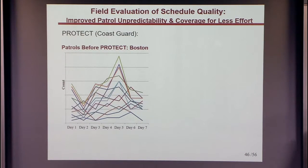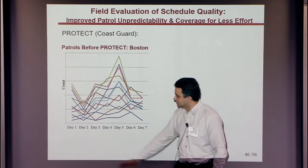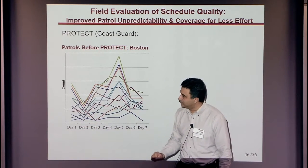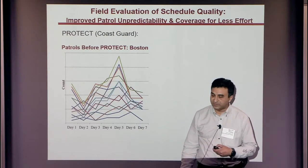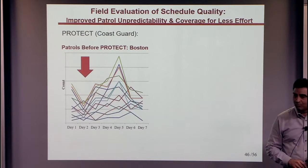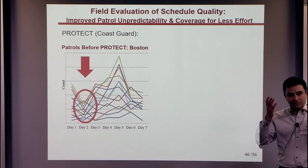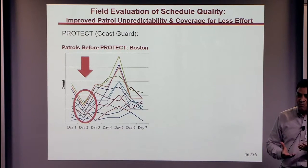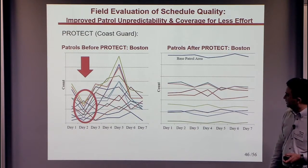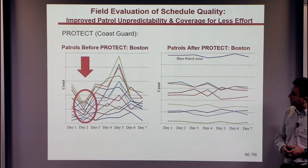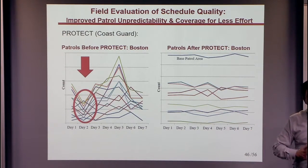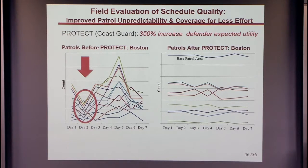Here is actual patrol data from the Port of Boston done by humans before PROTECT. The y-axis shows visit frequency by day of week. There are very few patrols on day two — a good day to attack — and the lines crisscross with no systematic weighting by target importance. After PROTECT, less important targets are visited less frequently, more important targets more frequently, there is no dip on day two, and day-to-day destination remains unpredictable. From a defender expected utility perspective, there is a 350% increase before versus after PROTECT.